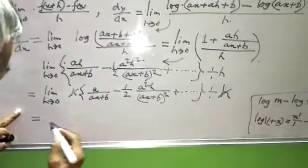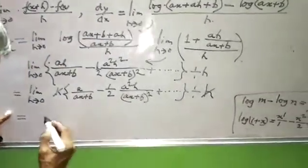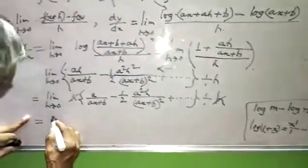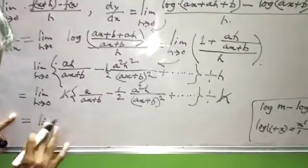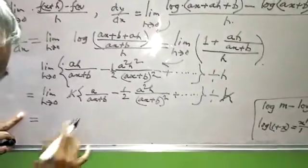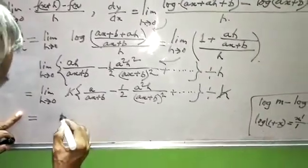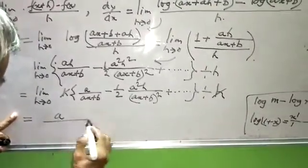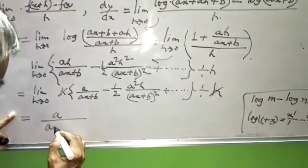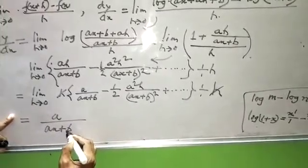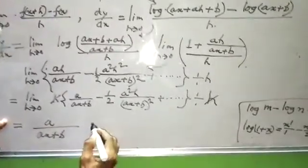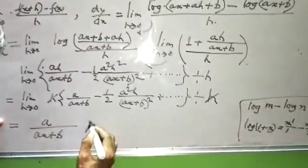Equal to limit h tends to 0 of [a/(ax + b) minus terms with h]. As h tends to 0, all remaining terms vanish. Therefore dy/dx = a/(ax + b). This is the answer.